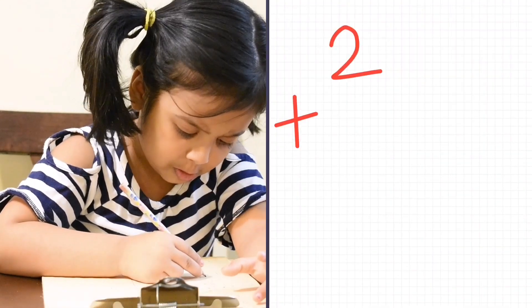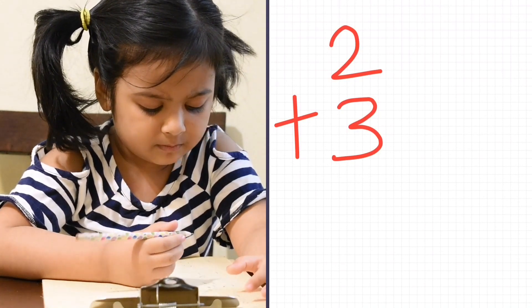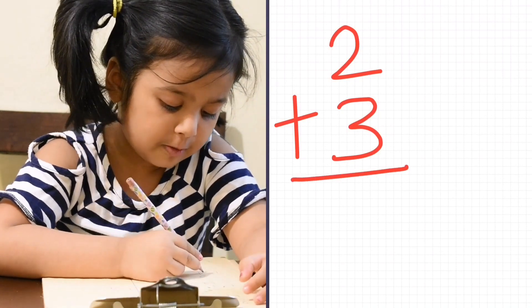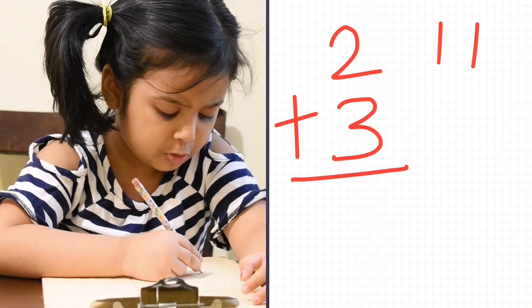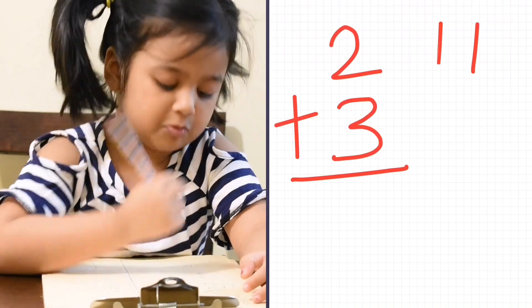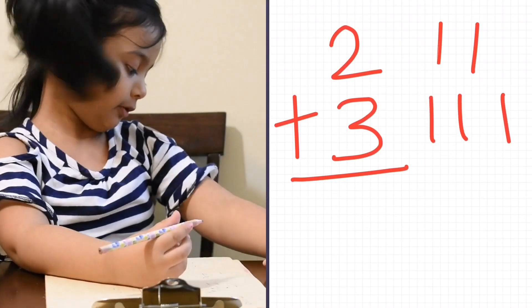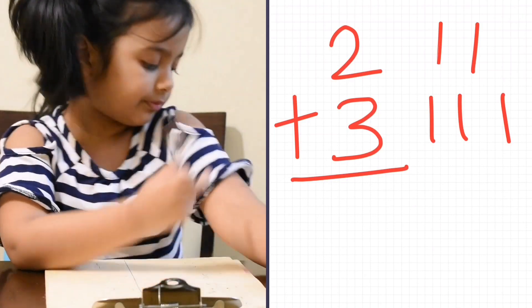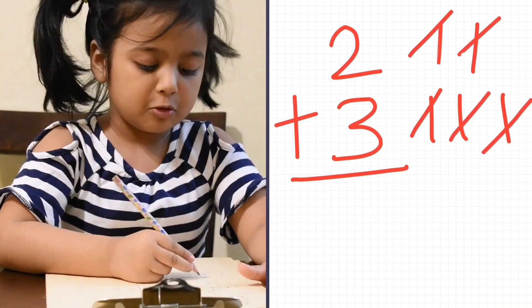2 plus 3 equals to how much? For 2, draw 2 sticks! 1, 2! For 3, draw 3 sticks! 1, 2, 3! Now count all the sticks! 1, 2, 3, 4, 5! So 2 plus 3 equals to 5!